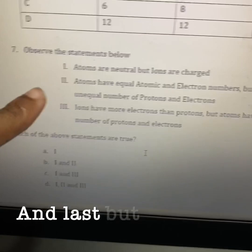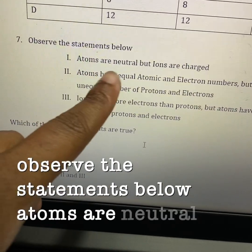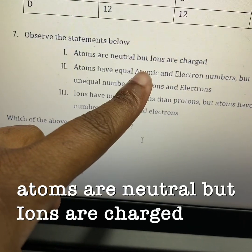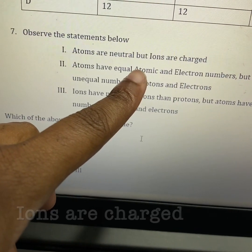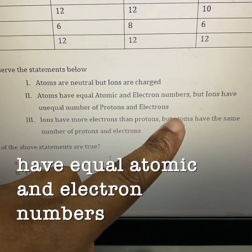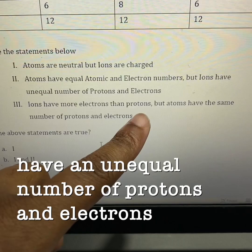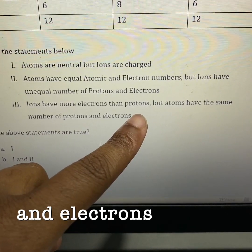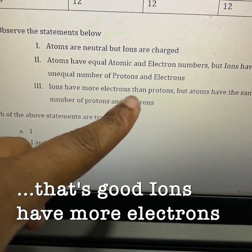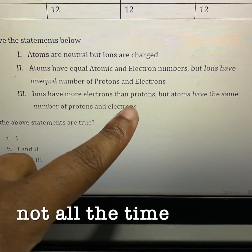And last but not least, observe the statements below. Atoms are neutral, but ions are charged. That's good. Atoms have equal atomic and electron numbers, but ions have unequal number of protons and electrons. That's good. Ions have more electrons than protons. What? Not all the time.